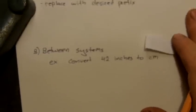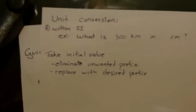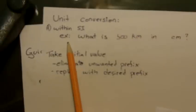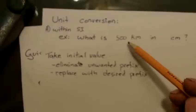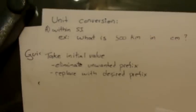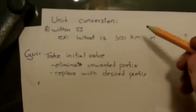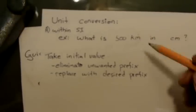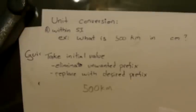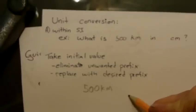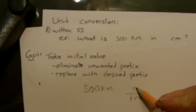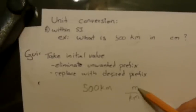Now, often what we want to do with our units is convert them. The first type of unit conversion, for example, within SI, let's say that we wanted to convert 500 kilometers into centimeters. So the first thing we do is we want to get rid of the unwanted prefix. We want to get rid of that five kilometers. So we take our original 500 kilometers and we multiply it by a fraction with kilometers on the bottom. We're going to replace the kilometers with the original base.